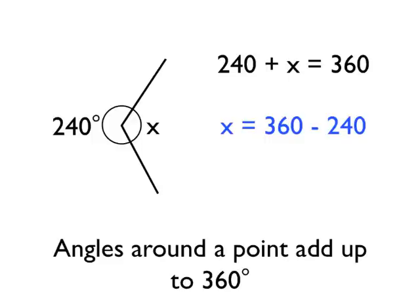Another way of thinking of that is to say if we started with 360 degrees and took 240 degrees away, we'd be left with the size of angle X. So 360 take away 240 is angle X. X is 360 take 240, which is 120 degrees. We've calculated the size of angle X using our angle rule.